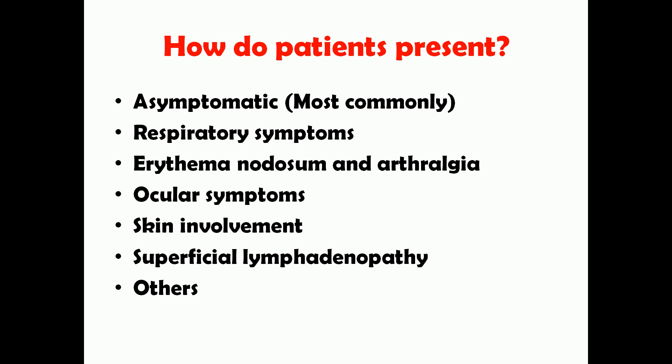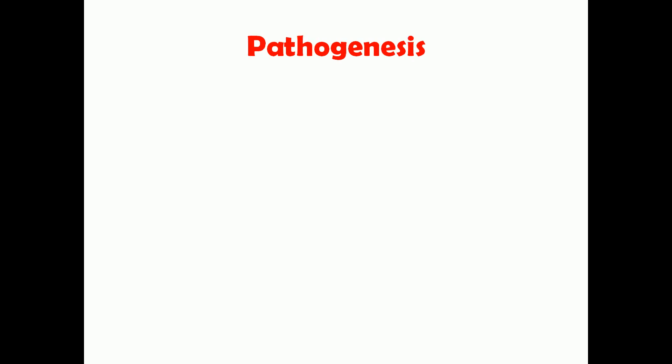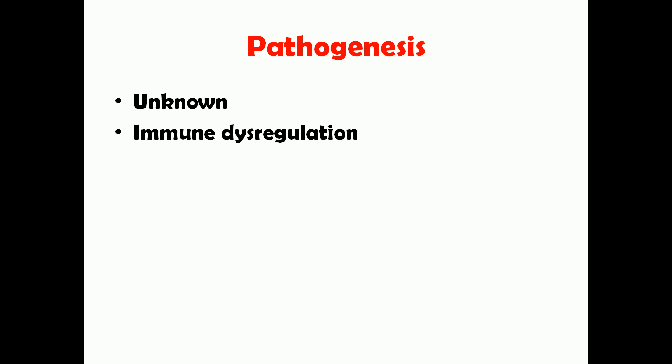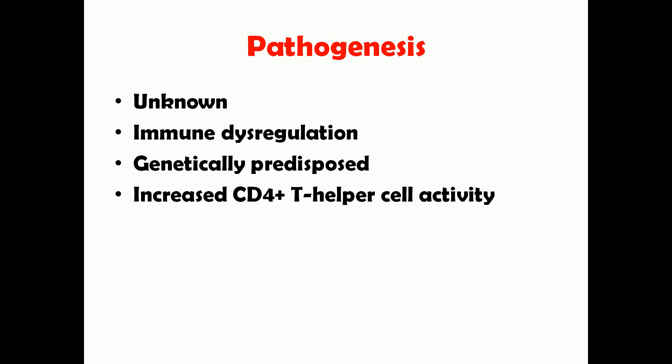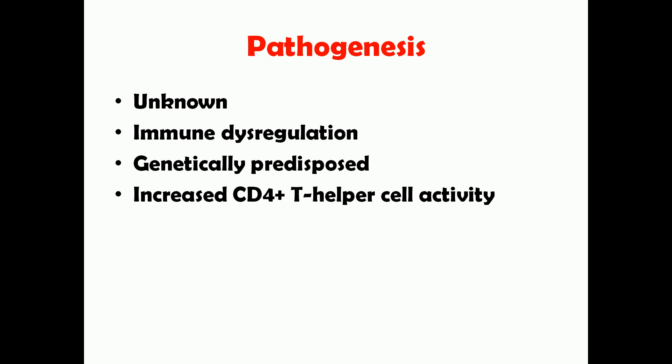The pathogenesis of sarcoidosis is not clearly known; it is a disease of unknown etiology. However, it is thought that immune dysregulation in genetically predisposed individuals plays a role. This leads to increased CD4-positive T helper cell activity, causing production of cytokines such as IL-2, interferon-gamma, interleukin-8, and tumor necrosis factor — all pro-inflammatory — which drive granuloma formation in organs such as the lungs, liver, and spleen.